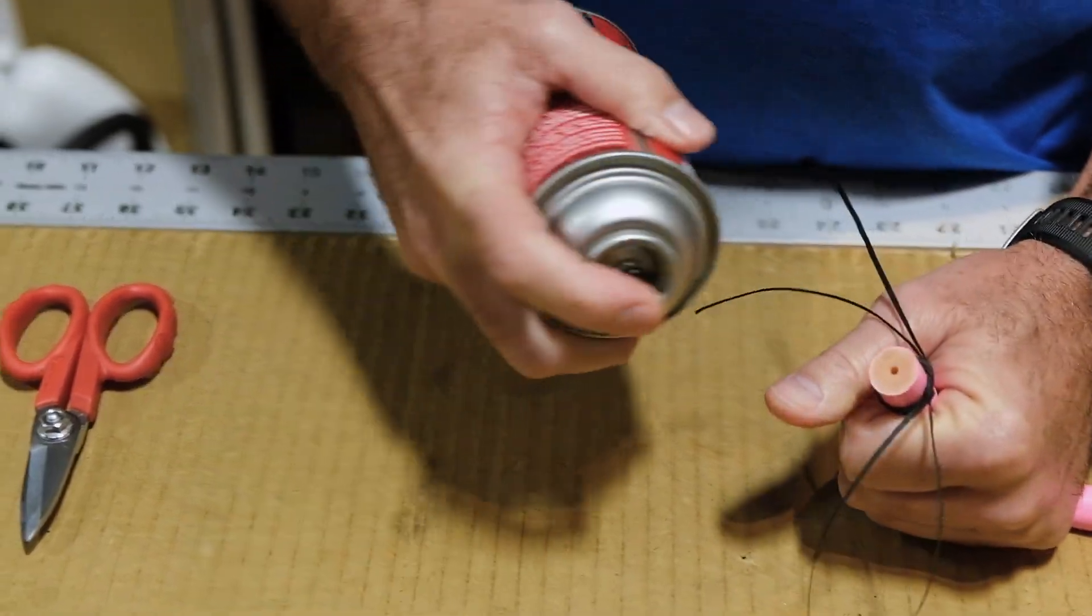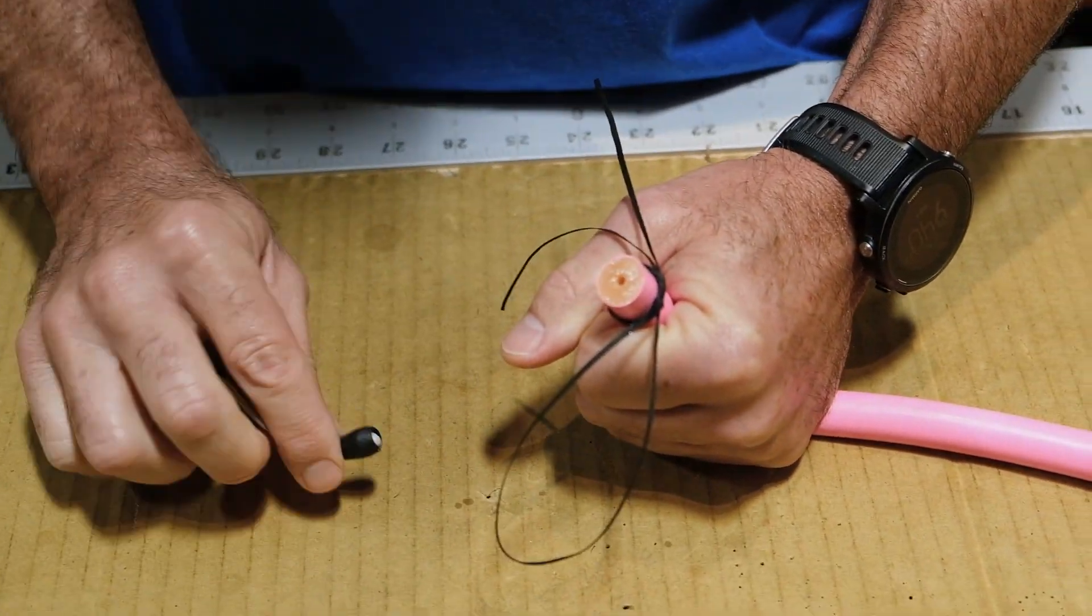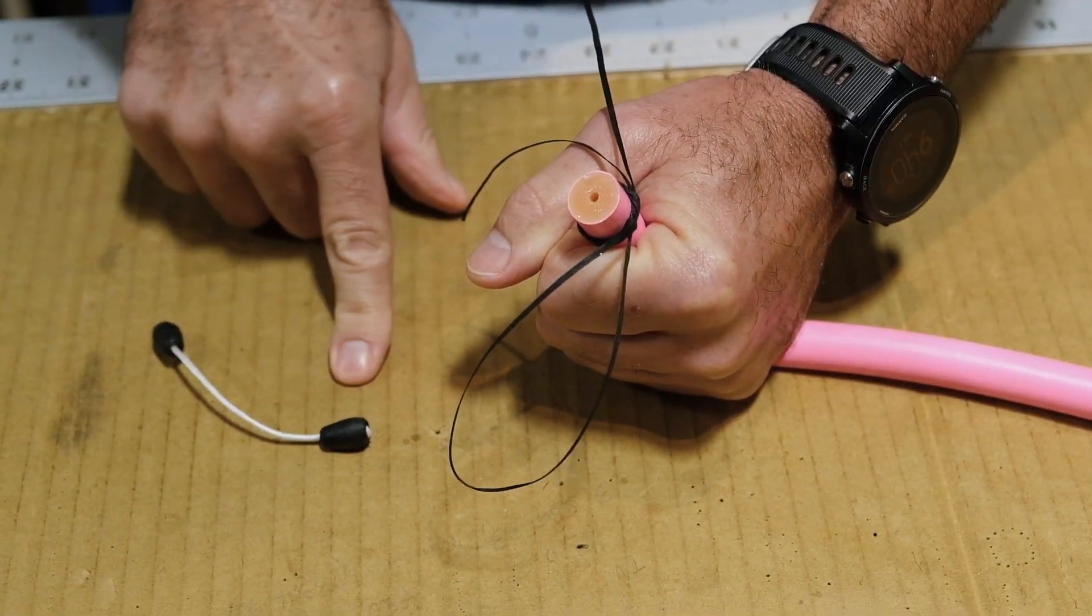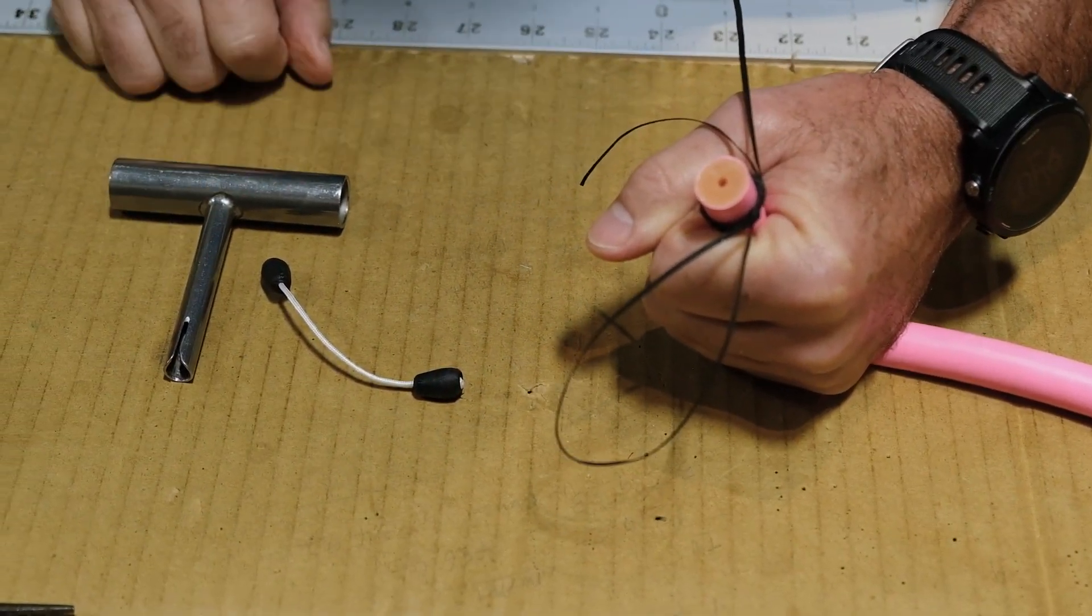And now you have your double constrictor knot ready to be cinched down nice and tight. From here, we usually use a heavy duty silicone spray. A little spray there to kind of lube it up. We have our wishbone, Dyneema wishbone with a bead, a plastic bead on the end. And this is our wishbone tool.